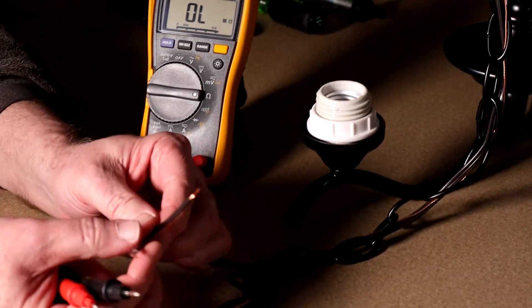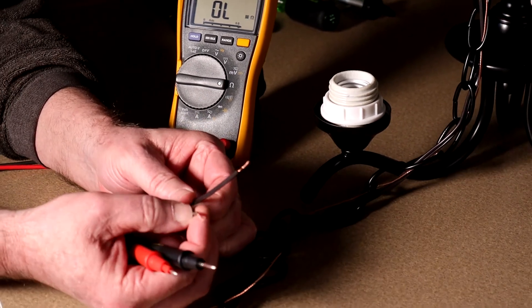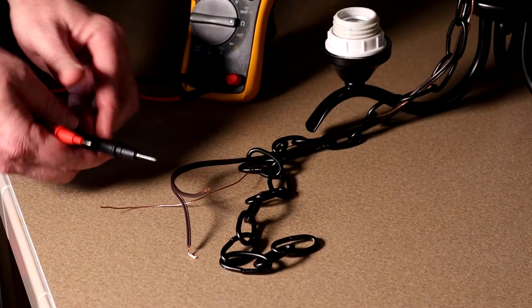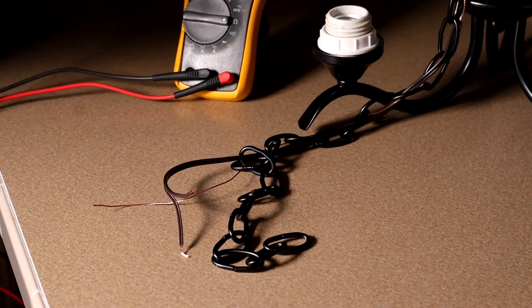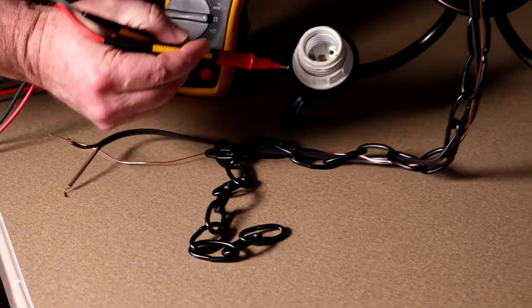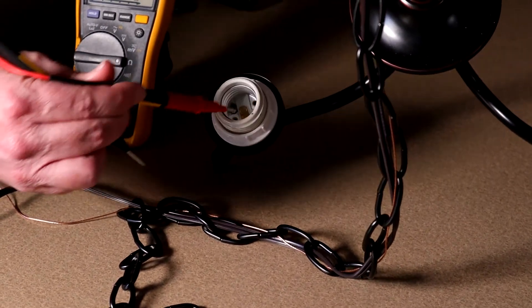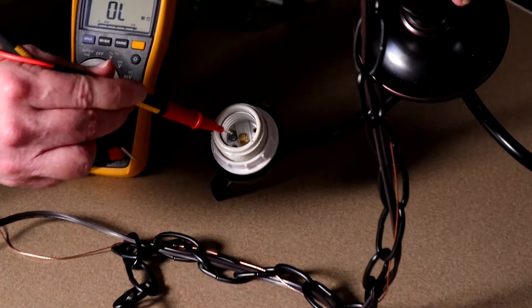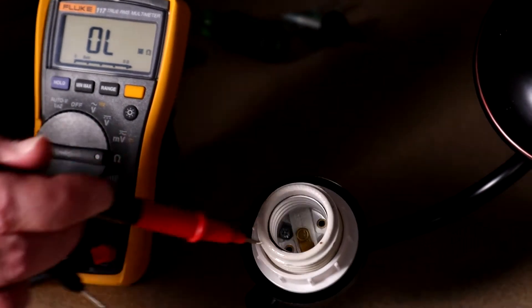Okay, so if I find this smooth conductor here, and what I'm going to do is I'm going to measure that smooth one to the center post of the lamp, which is the conductor in the middle of the socket, which will contact the very end of the light bulb.